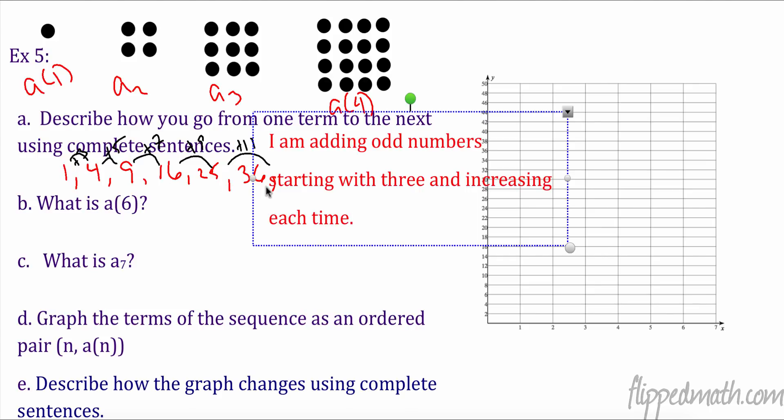So what is A sub 6? 1, 2, 3, 4, 5, 6. We already got A sub 6. It is 36. A sub 7. So if I added 11, my next one would be add 13. 36 plus 13 would be 49. Let's graph these. So our first 1, 1, right here. 2, 4. Well played. 3, 9. Very good. 4, 16. Well done. 5, 25. Yeah, let's add them all up here. And then 6, 36. And 7, 49.